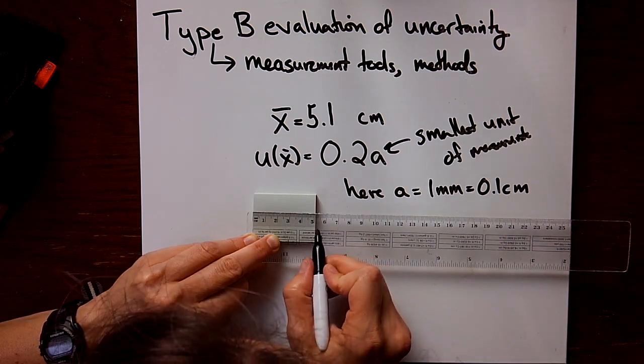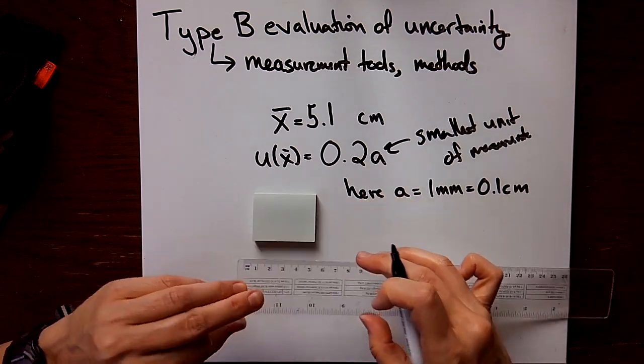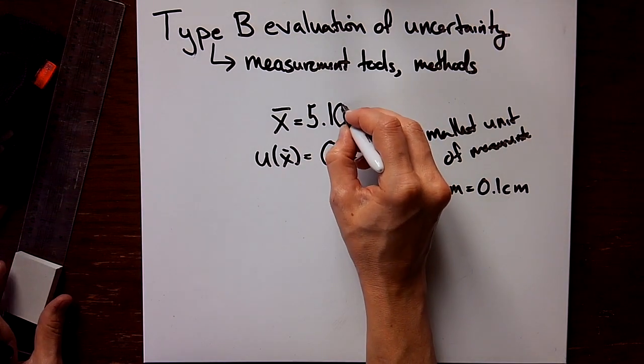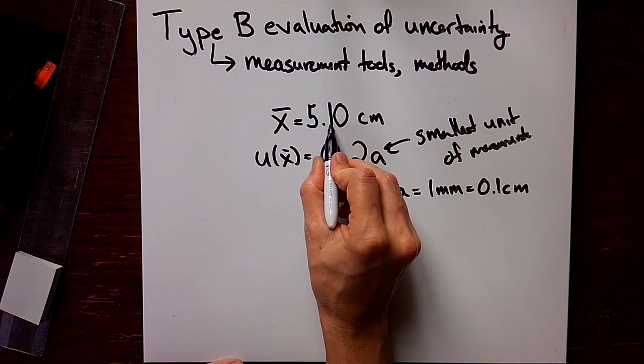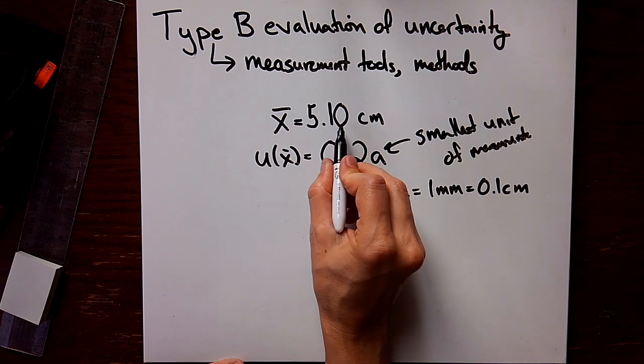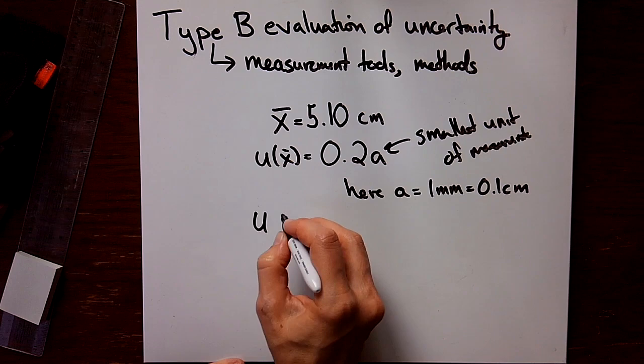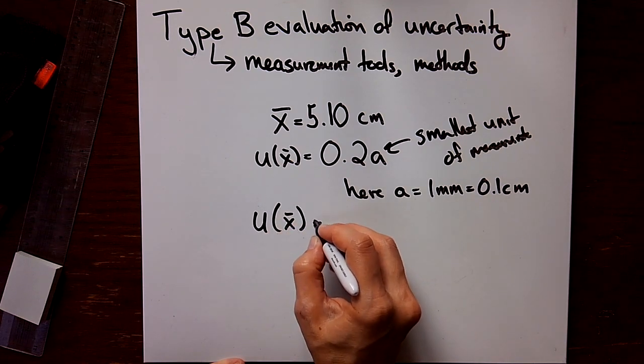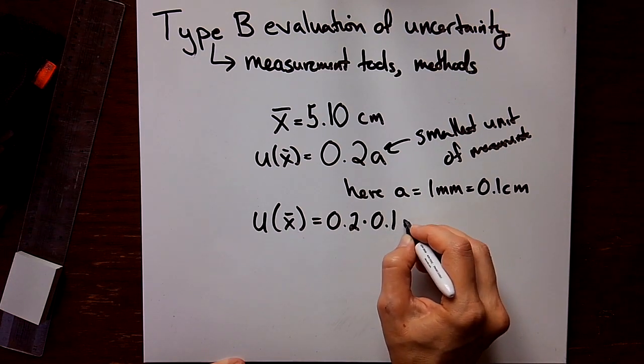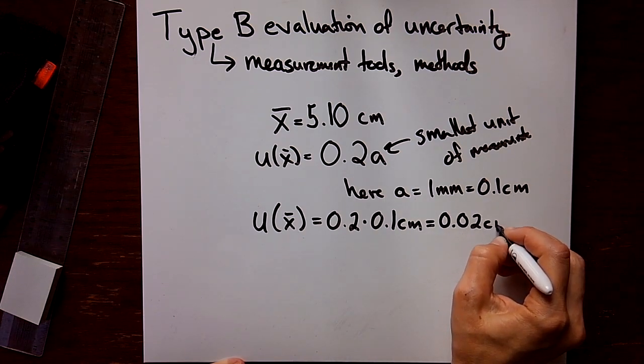That means the uncertainty is 0.2 times a or 0.2 times 0.1 centimeter. Now what I'm doing here is looking to see, is it really on that line? Is it a little bit bigger or smaller? It looks like it's really truly on that line. So I'm going to add in a zero here. I really do think it's 5.1. It got to that first millimeter tick mark and it's exactly on that. Then for the uncertainty, it's 0.2 times 0.1 centimeter. So that's going to be 0.02 centimeters.